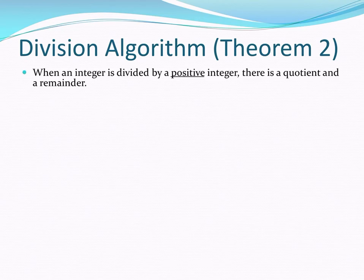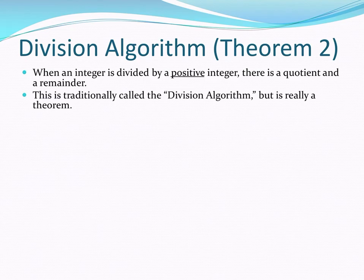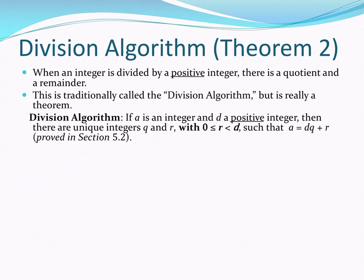I have another theorem. Whenever we take an integer and divide it by a positive integer, we get a quotient and a remainder. It should be familiar to you from long division, perhaps. Note that we will always be dividing by a positive integer. The integer we're dividing into may be negative or positive, but the one we're dividing by will always be positive. The statement is traditionally called the division algorithm, but it's really a theorem. And here's what it states. If A is an integer and D is a positive integer, then there are unique integers Q and R, that's the quotient and remainder, where the remainder has to be strictly less than D and non-negative, such that A is equal to D times Q plus R.